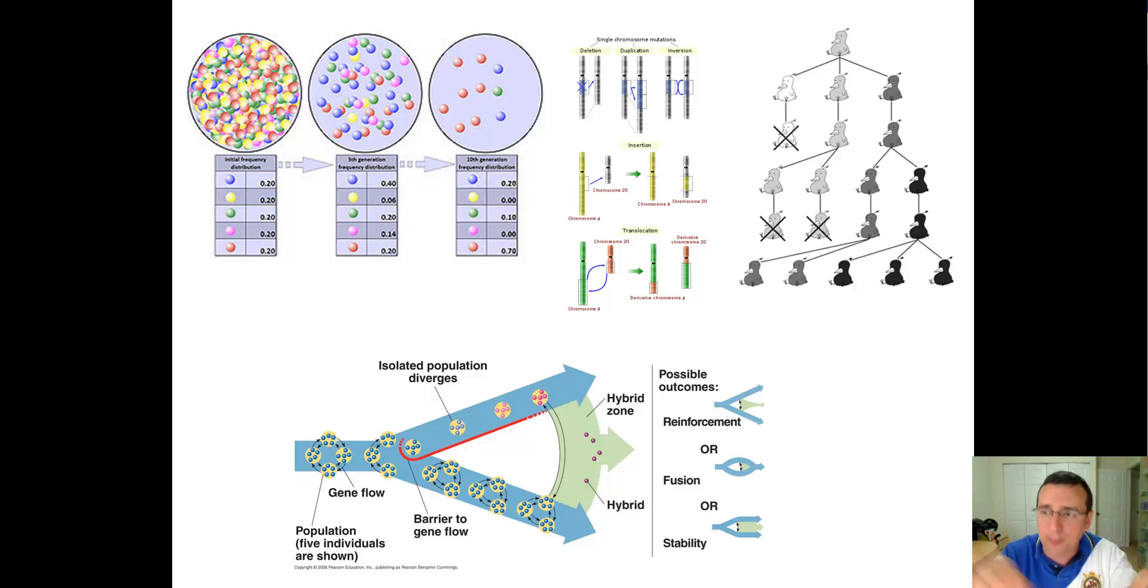If everything that happens in one population happens to the other—in other words, if they're exposed to the same environment and exactly the same mutations happen in both populations—then you're not going to see much difference occur between them. But that's not typically what happens in life. What ends up happening in life is three things.